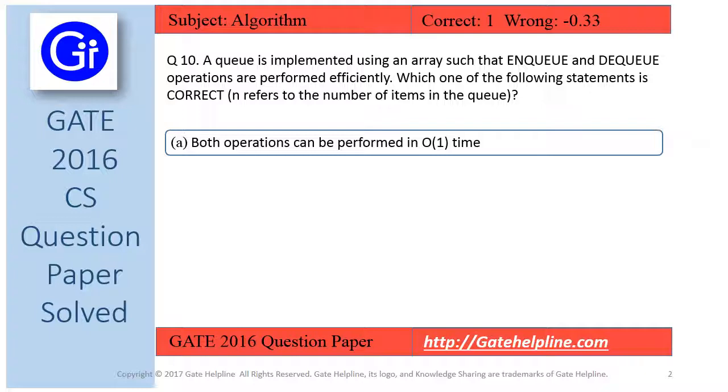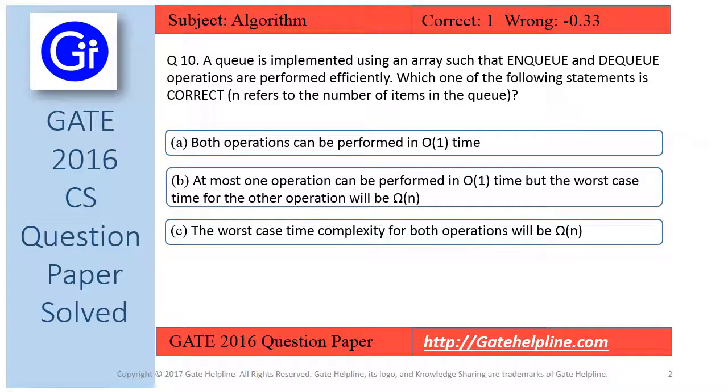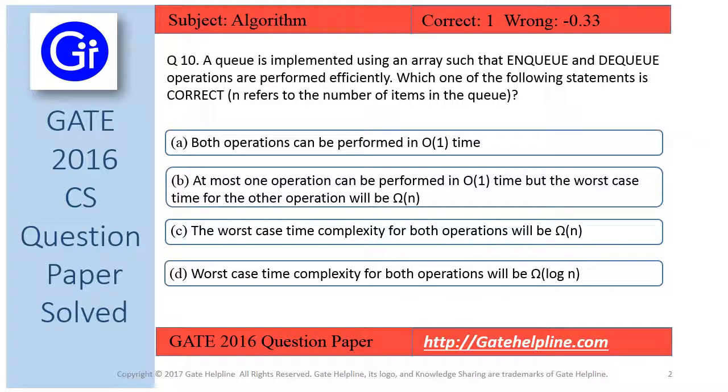And the options are: (a) both operations can be performed in big O of 1 time, (b) at most one operation can be performed in big O of 1 time but the worst case time for the other operation will be Ω(n), (c) the worst case time complexity of both operations will be Ω(n), and (d) worst case time complexity for both operations will be Ω(log n).